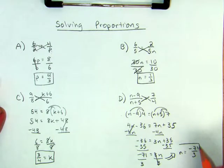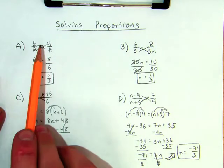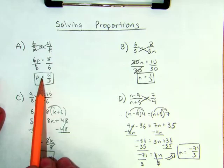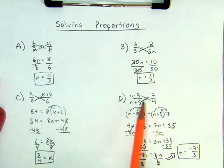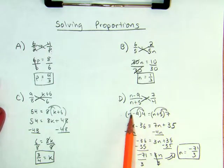Nothing changes when the proportion is simply numbers and a variable. Cross multiply and solve. When it's two binomials and a couple numbers, cross multiply and solve. And that is how we solve proportions.